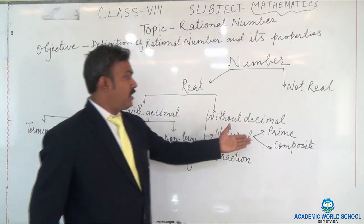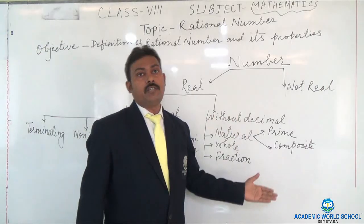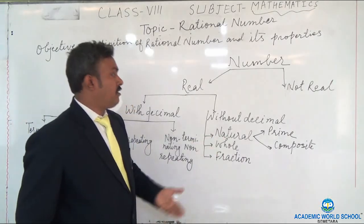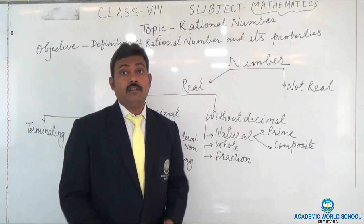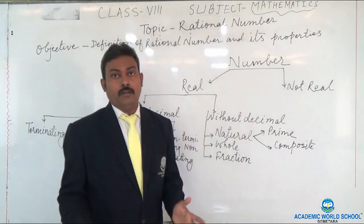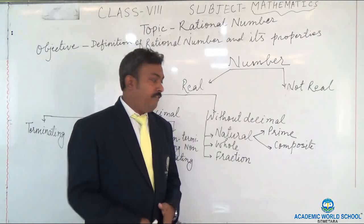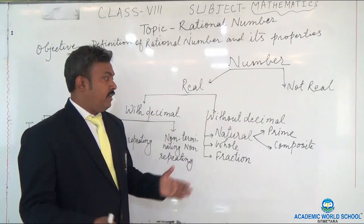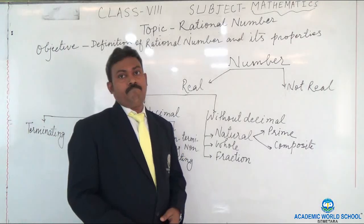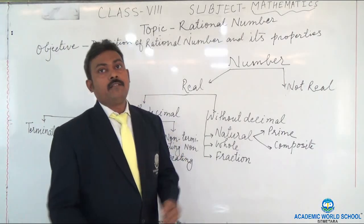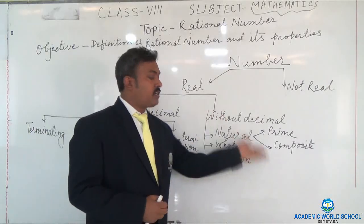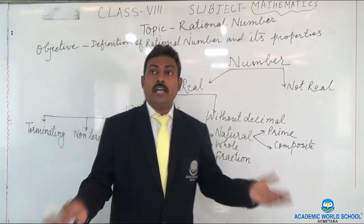If you see the natural number, you will find there are two types: one is the prime number and another is the composite number. This we have already studied. The natural number is the one which exists in nature. It starts from one — a set of numbers which starts from one and goes to infinity. It has two types: prime and composite. Prime numbers have only two factors: one and the number itself. The numbers other than prime are all composite numbers.